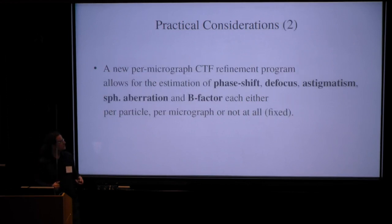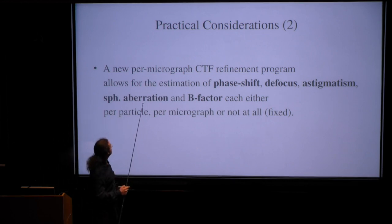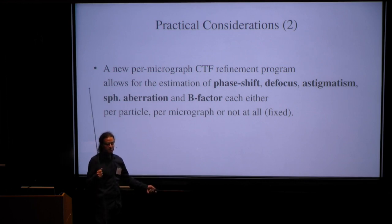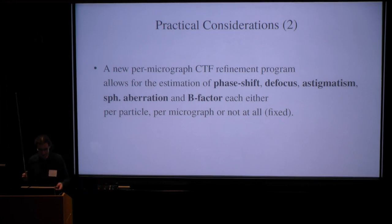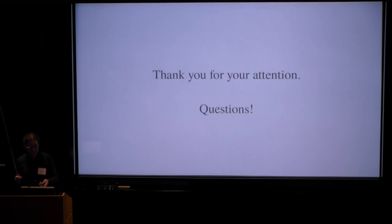And the second thing, there is now also a new per-micrograph global estimation procedure for the remaining low-order CTF terms that I haven't talked about very much. So with this, you can now estimate the phase shift, the defocus, the astigmatism, the spherical aberration, and the per-particle B and scale factors, each of them either per-micrograph or per-particle, or not at all. That is leaving them fixed. All right, thank you for your attention, and please ask your questions now.